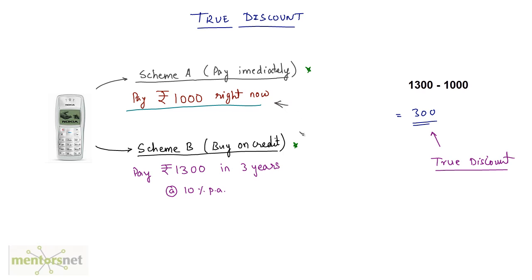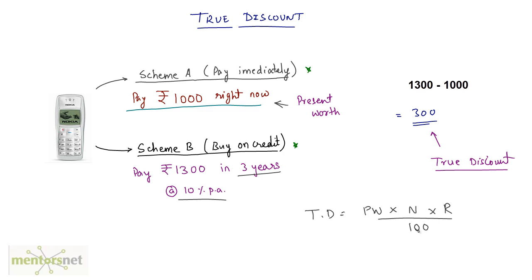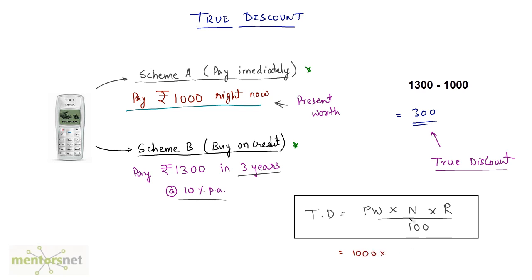True discount is basically the amount saved by paying the present worth of the goods instead of buying it on loan. If you observe carefully, true discount is basically the simple interest on this present worth for the given number of years and rate of interest. True discount = P × N × R / 100. Putting in the values: 1000 × 3 × 10 / 100 = 300. So true discount is the simple interest calculated on the present worth of the goods.